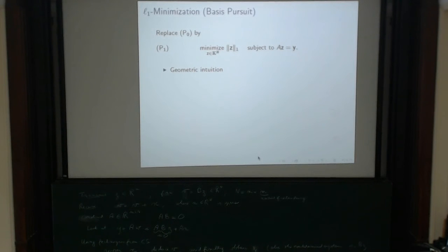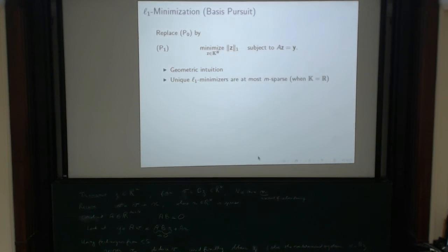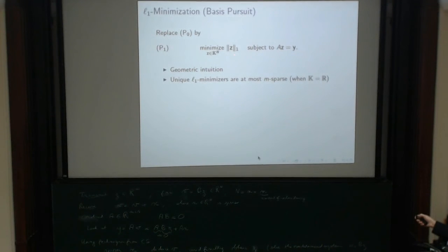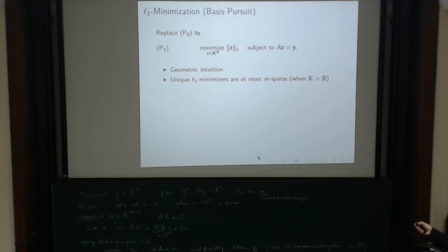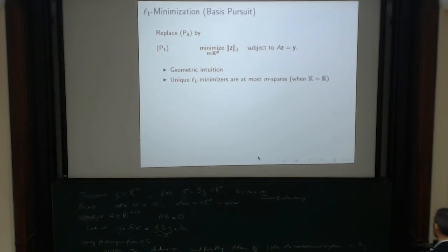There is geometric intuition for why L1 minimization works. More importantly: when you solve this minimization problem, if the minimizer is unique, it is necessarily already intrinsically sparse — at most M-sparse, where M is the number of rows of A.